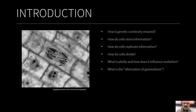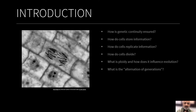As an introduction, we have to understand the basis for the continuation of genetic material. In order to do this, we have to understand how cells store information, how they replicate information, and how they divide by transmitting this information. We also have to understand the concept of ploidy and how it influences evolution, as well as the concept of alternation of generations.